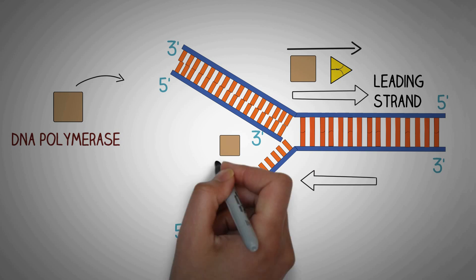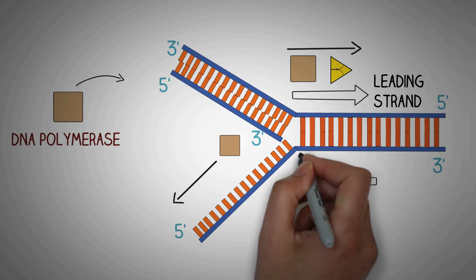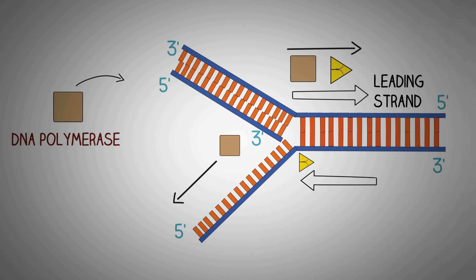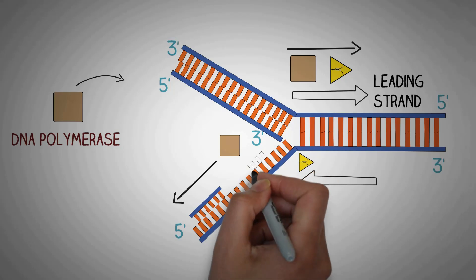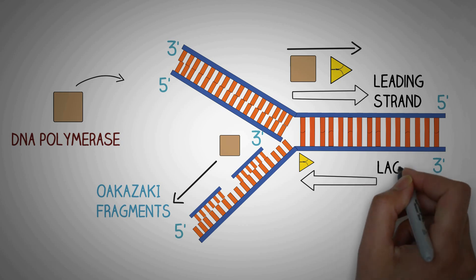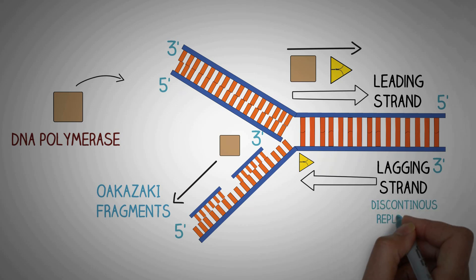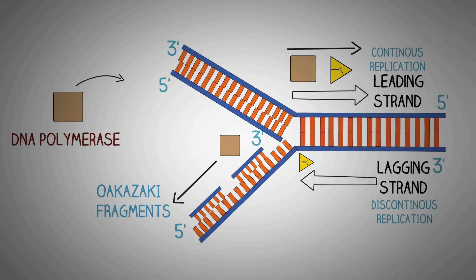When we look at the opposite strand of DNA, which is running in the opposite direction, things are very different. The DNA polymerase has to form the new strand in the five prime to three prime direction, but since the helicase is opening the DNA helix in the opposite direction, the DNA polymerase cannot synthesize the new strand continuously. This problem is solved by forming the new strand in short segments known as Okazaki fragments, which are later joined by a different enzyme to produce one continuous strand. Due to this reason, the opposite strand is known as the lagging strand, and replication on it is discontinuous, as compared to the continuous replication on the leading strand.